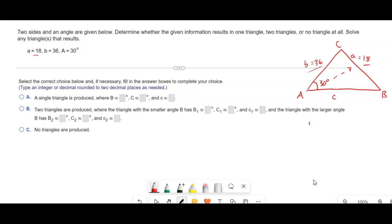So the next thing we have to do is calculate h, and h is always going to be equal to the side that we're given that's not opposite the angle we're given. So B in this case. That's 36 times the sine of the angle we're given, so sine A, which is 30 degrees.